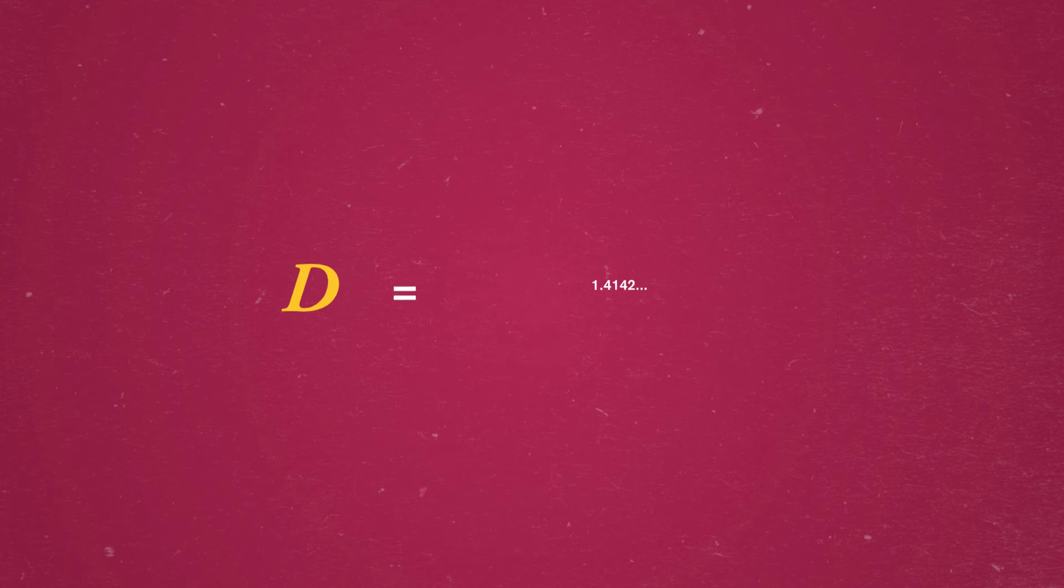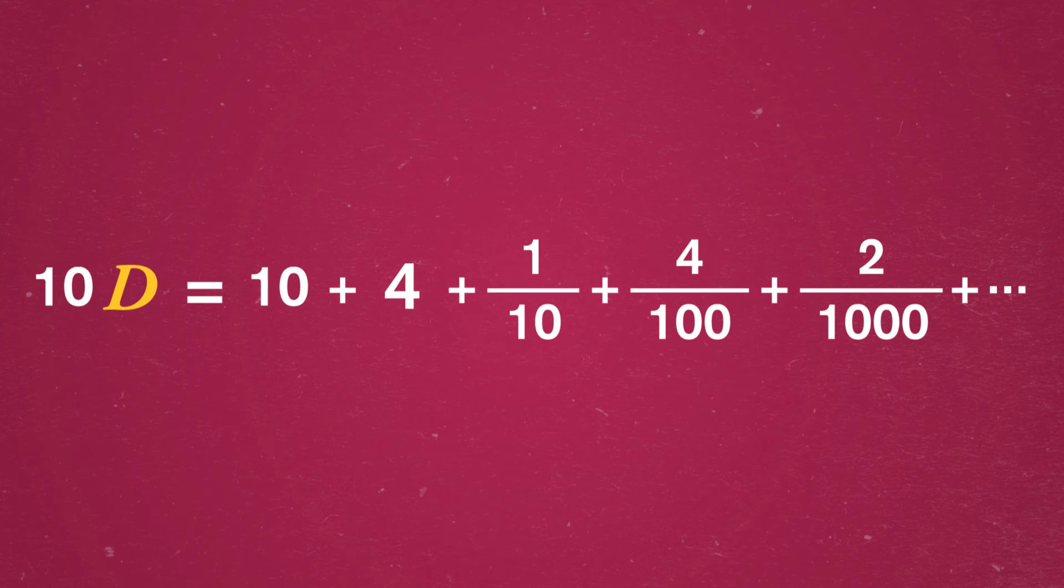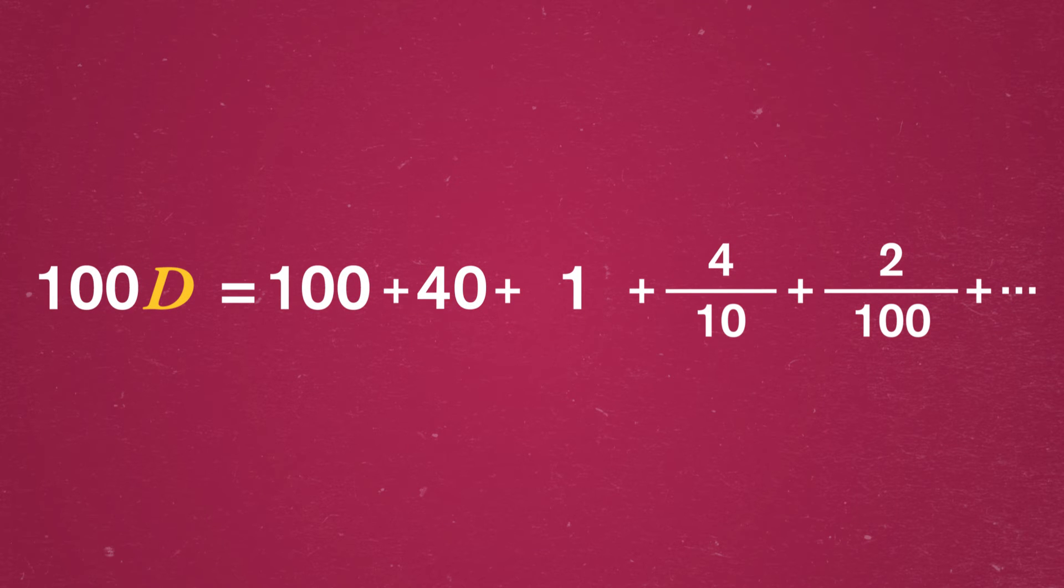If the decimal doesn't repeat, no matter how many times we multiply by 10, which basically just shifts the decimal place one place to the left, we'll never get the exact same sequence of fractions on the right side. So we'll never get a d on both sides. We won't be able to simplify the equation, and the trick fails. So, does the decimal expansion of the square root of 2 ever repeat? We haven't seen a repeating pattern, but what about after a billion digits, or a quadrillion digits? To answer that, we must face down death.